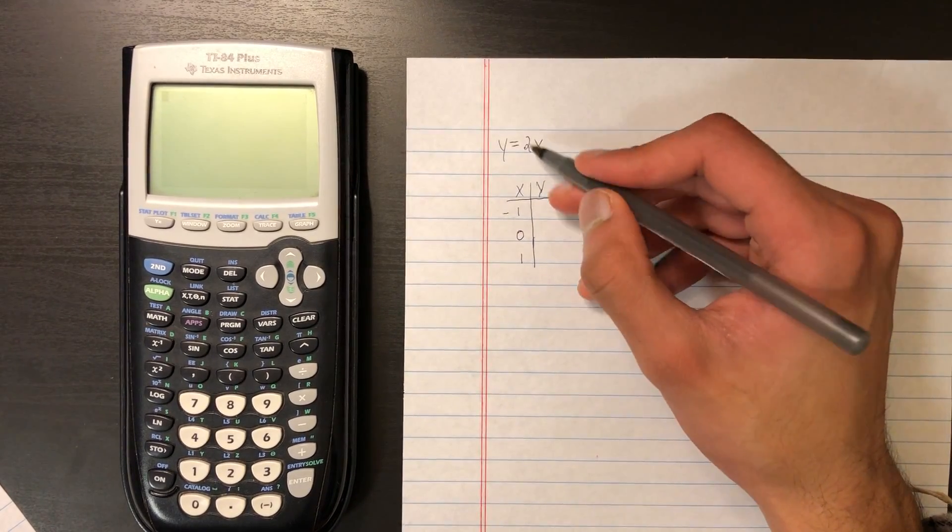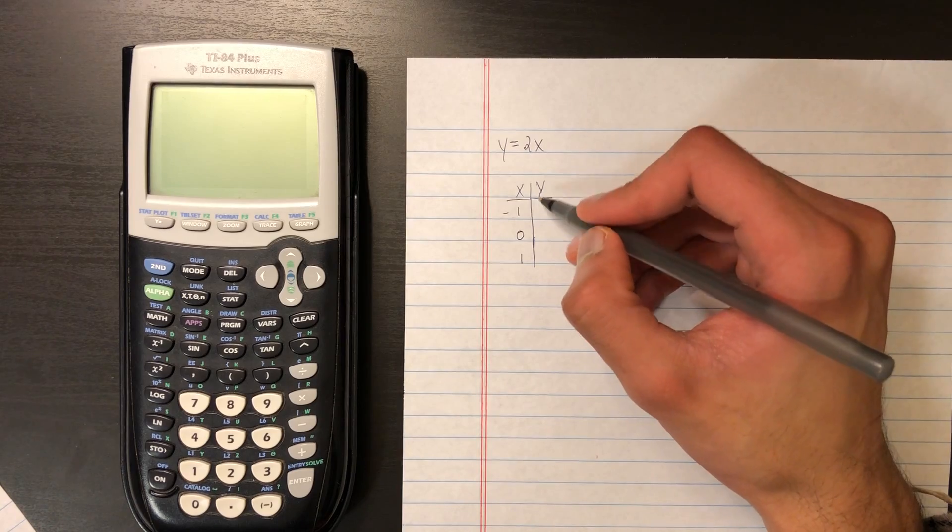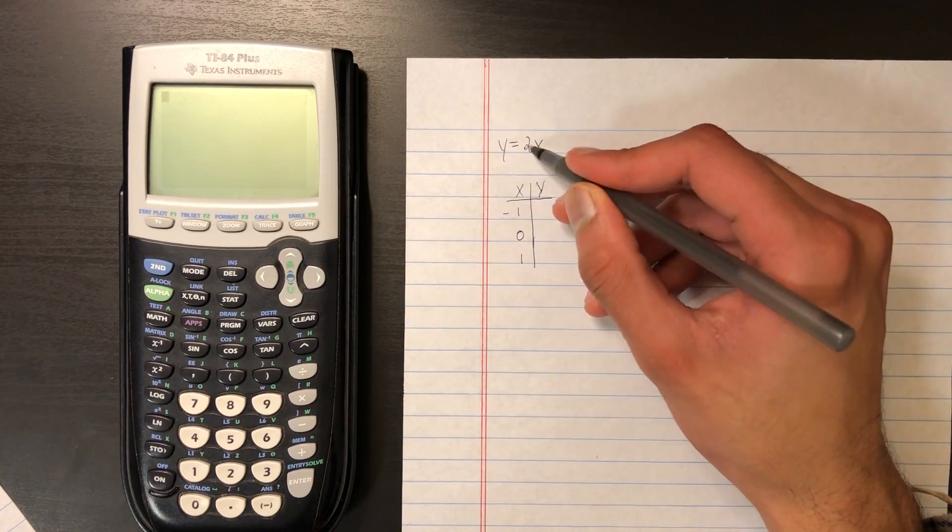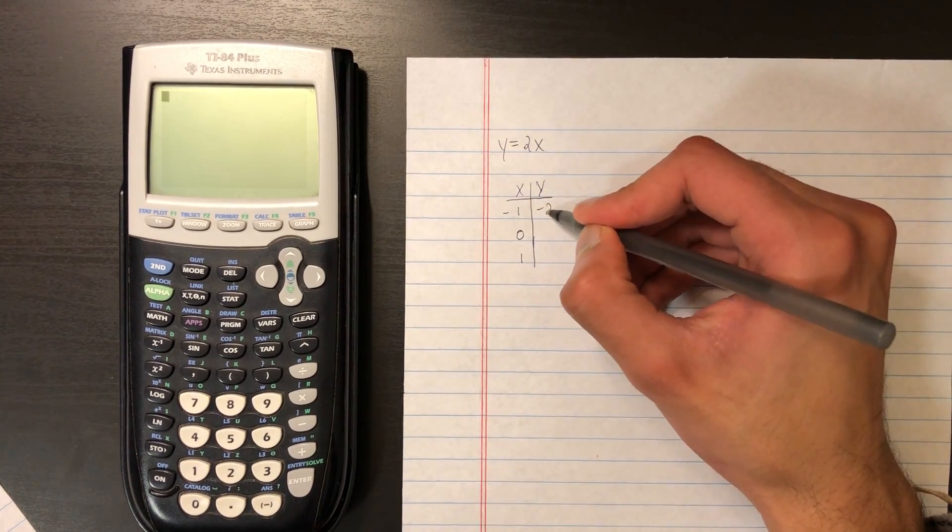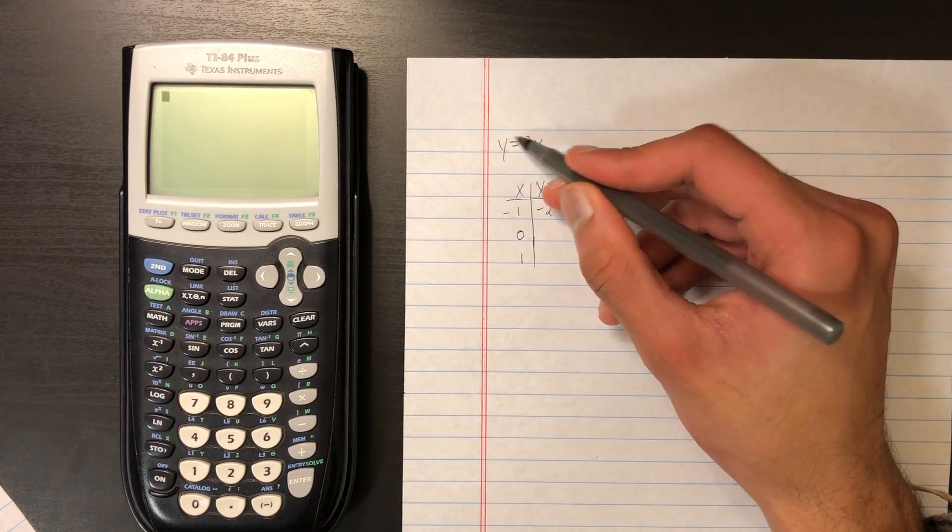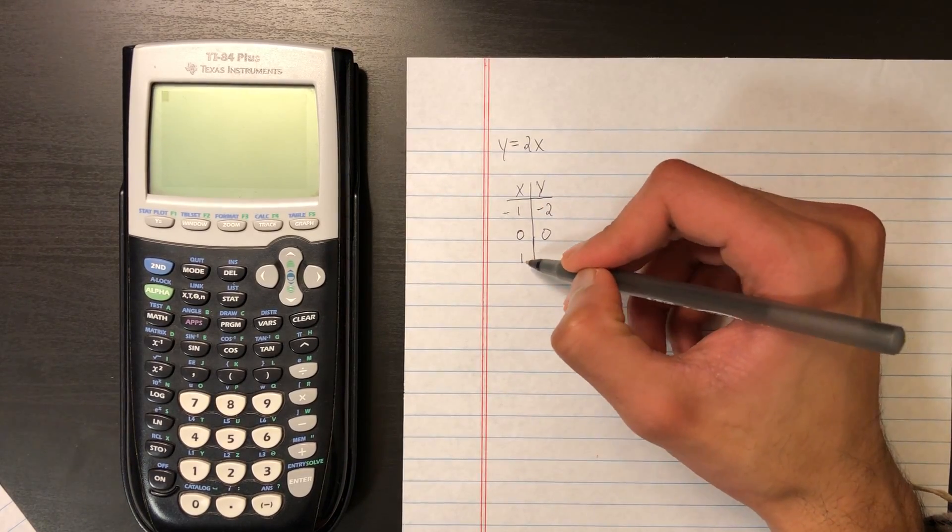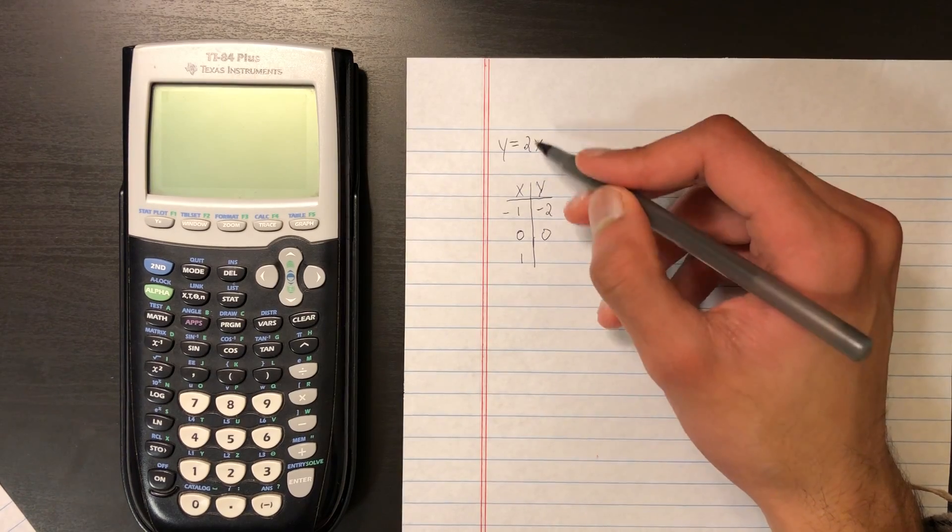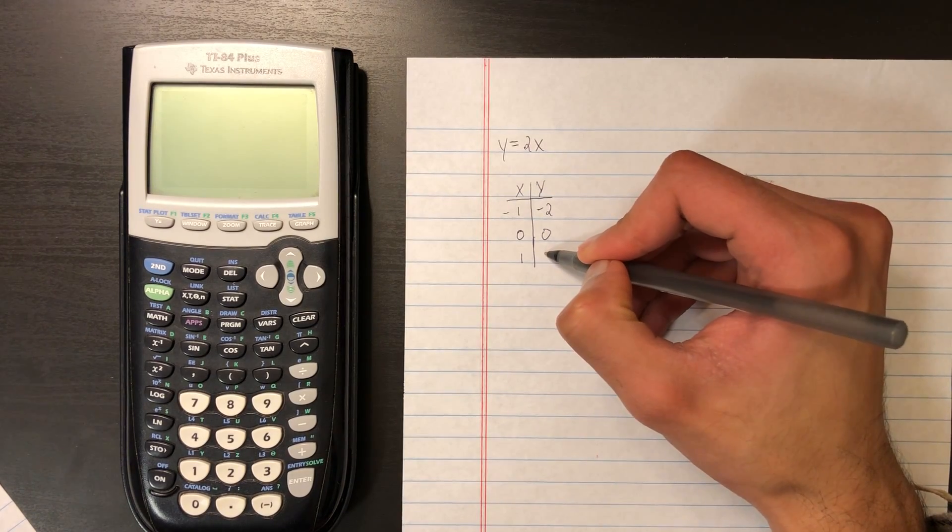So let's plug this into the equation to get the y values. Plugging negative 1 in gets us negative 2. 0 into this equation gets us 0, and then 1 into this equation, 1 times 2, gets us y equals 2.